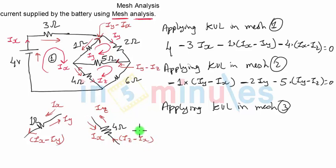And because I'm also traveling in the direction of this equivalent current, that means in clockwise direction, the drop that we get will be minus 4 times (IZ minus IX).